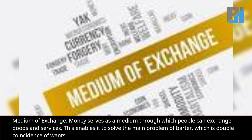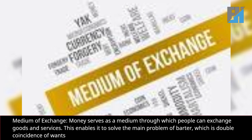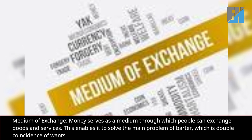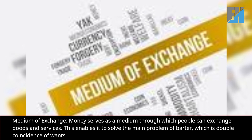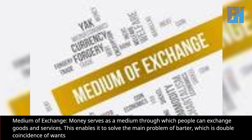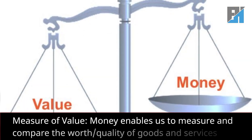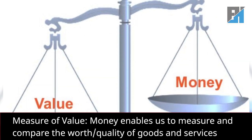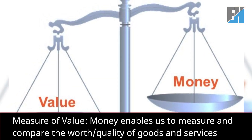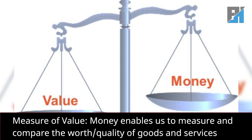Medium of exchange: money serves as a medium through which people can exchange goods and services. This enables it to solve the main problem of barter, which is double coincidence of wants. Measure of value: money enables us to measure and compare the worth and quality of goods and services.